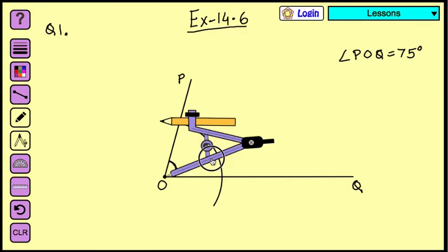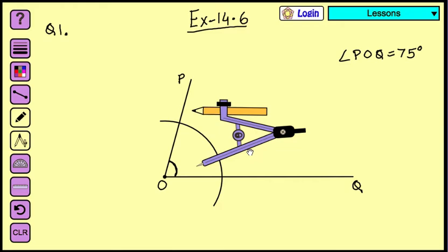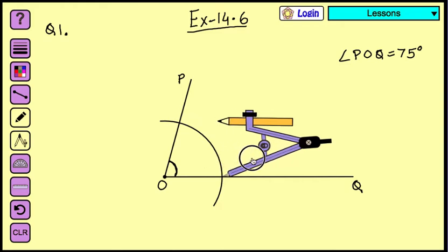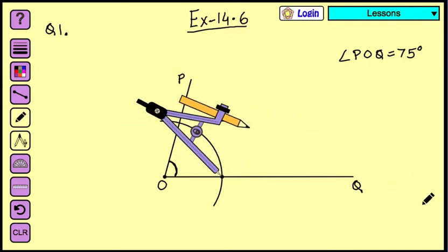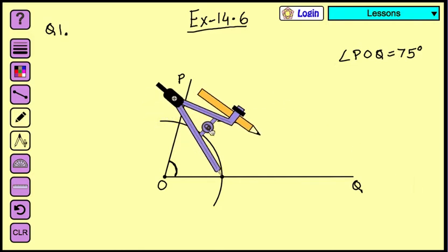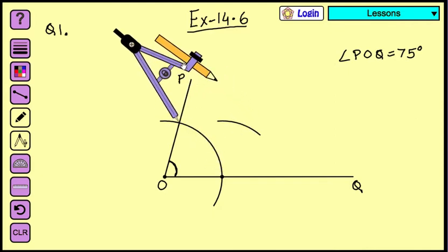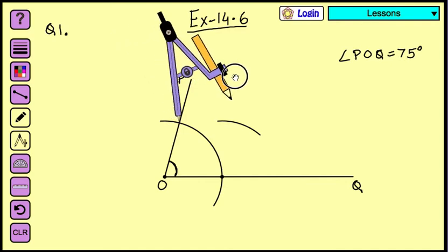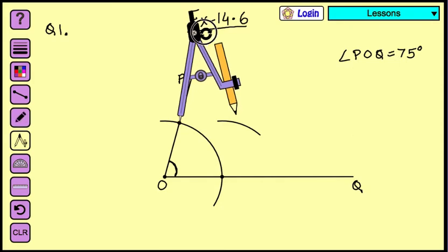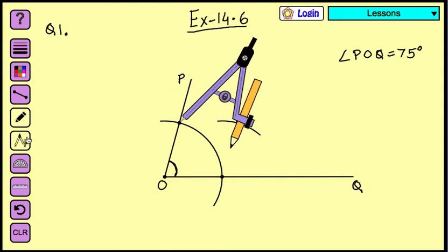Now place your compass at one point and draw an arc. Place the needle on the other end and draw the arc again. You will see these both arcs are going to cut each other at a point.